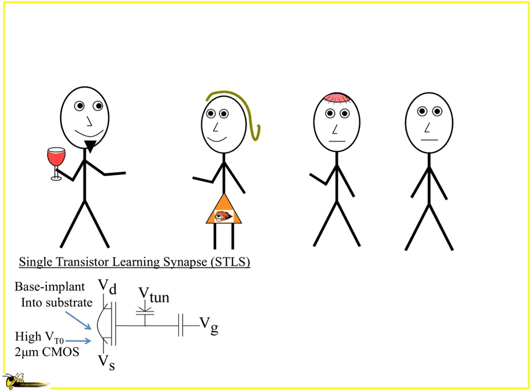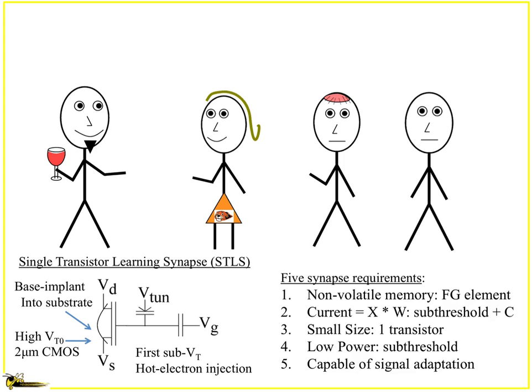That eventually led to the single transistor learning synapse concept, which basically started off by taking a transistor, put a base implant to kick up the threshold voltage to about six volts, and therefore you could make things work. Why? Because it became the first device that you could actually show injection in sub-threshold, and therefore the signal current and the adaptation are all really well related.